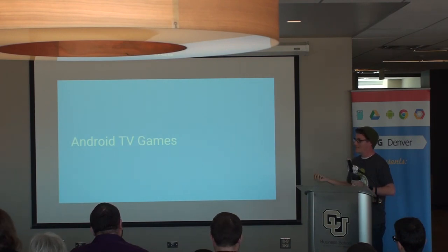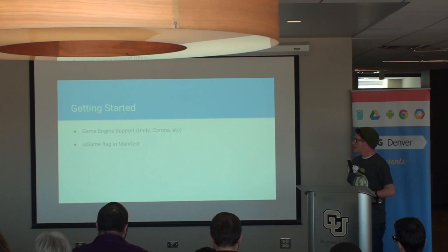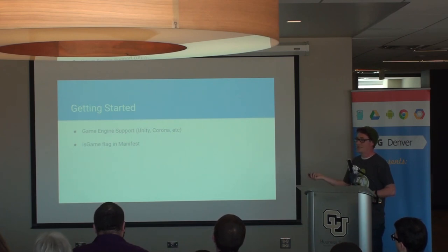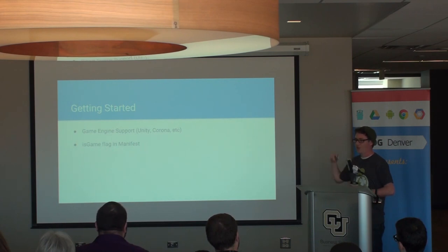Next there's games. There's nothing in the Leanback Support Library for games, but you can develop them just like a normal Android game. You can use any engine like Unity, Corona, or whatever you'd like, or build from scratch. Unity supports the D-pad controller immediately by just clicking a checkbox, which is great. There's also a game row as well as an application row on the Android TV home screen — as long as you set the appropriate manifest flag, your app will show up in that row.